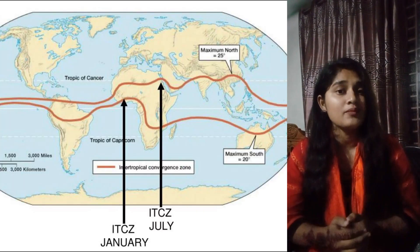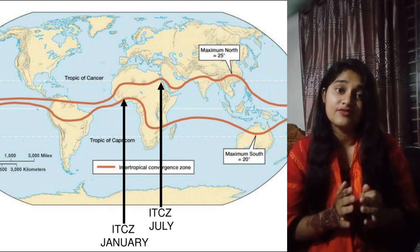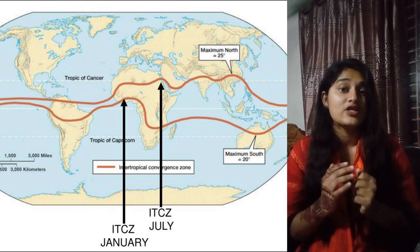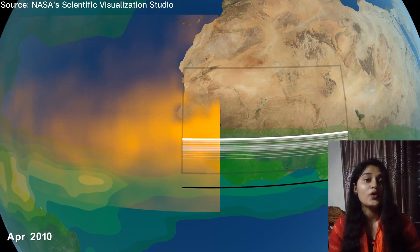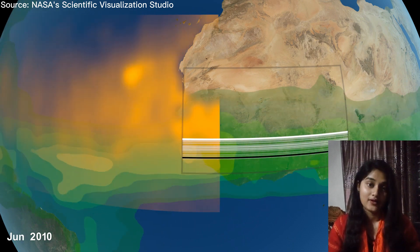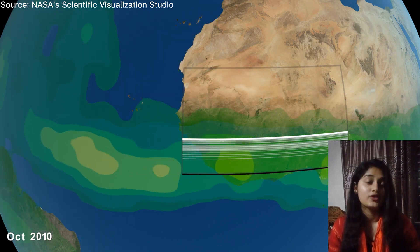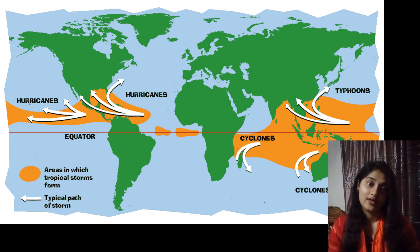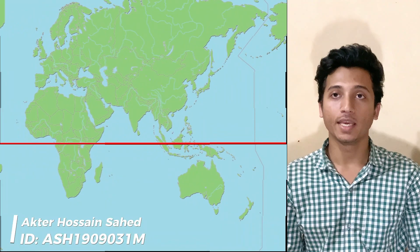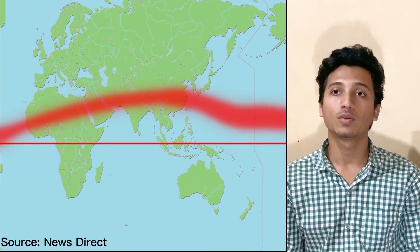It migrates north and south seasonally based on the movement of the sun. During the Northern Hemisphere summer, the Equatorial Trap shifts northwards, while during the Southern Hemisphere summer, it shifts southwards. The Equatorial Trap has an important effect on global weather patterns and is a major source of moisture for the regions around the equator. It also plays an important role in the formation of tropical cyclones and hurricanes in the Atlantic, Pacific, and Indian Oceans.